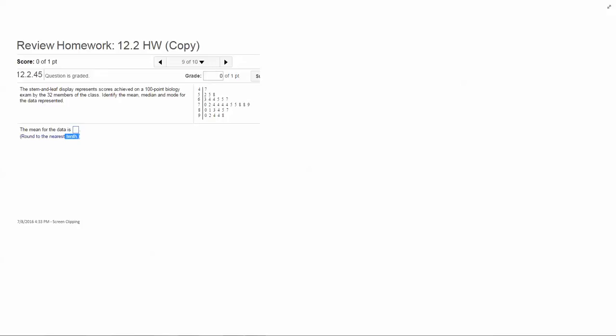A stem plot lists the data in order and organizes it so the numbers in the 40s are together. For instance we have 47, we have 52, 55, 58, and so on. It's no longer necessary to arrange the numbers in order from least to greatest.